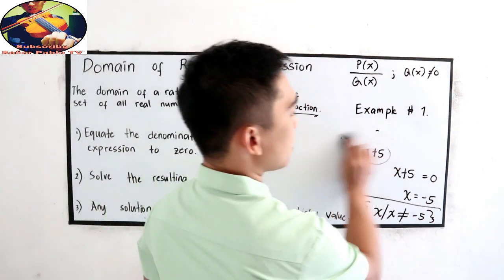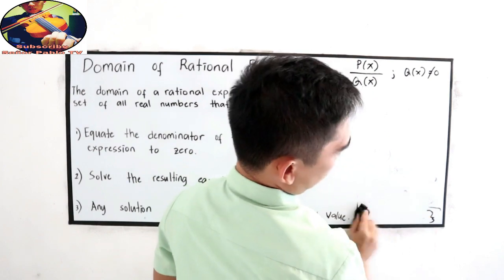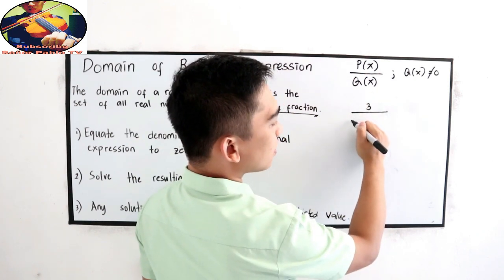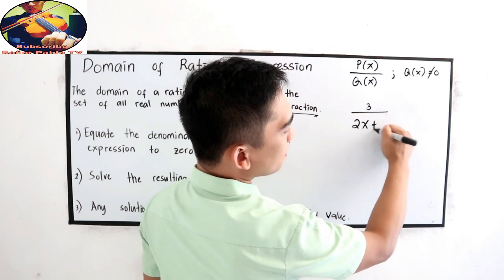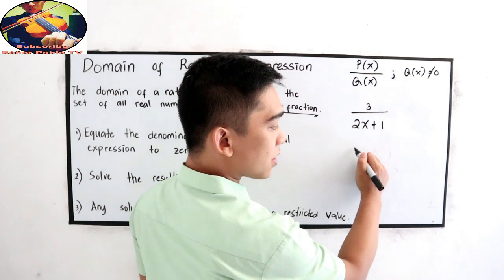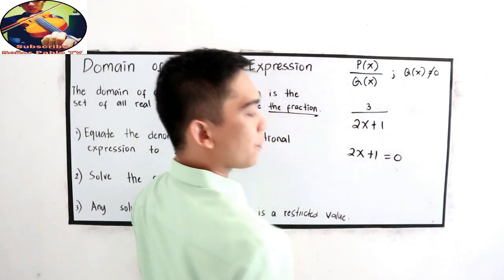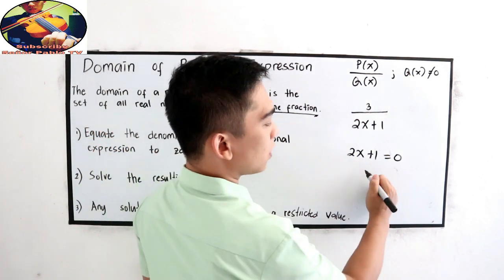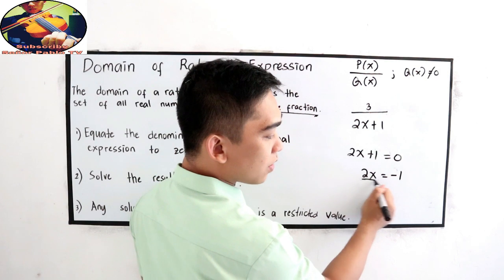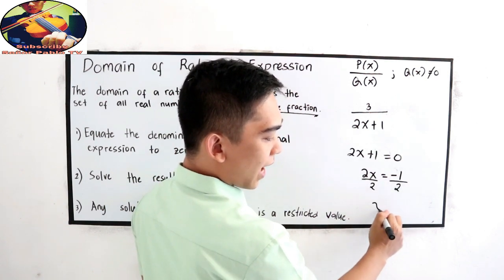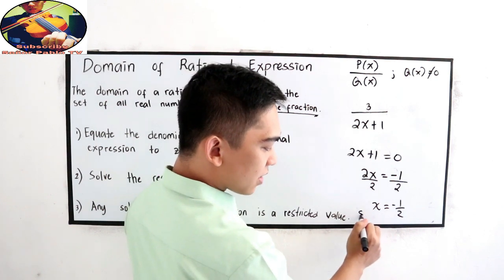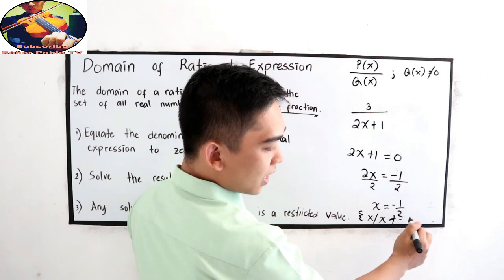Let's try one more. For example number 2, we have 3 over 2X plus 1. Find the denominator, then equate to zero: 2X plus 1 equals zero. Solving for X, we transpose positive 1 to get 2X equals negative 1, then divide by 2. So X is equal to negative one-half. This is our restricted value. Therefore, our domain is X such that X must not be equal to negative one-half.